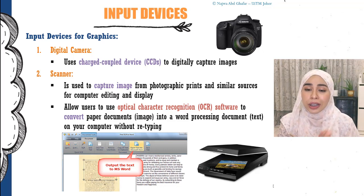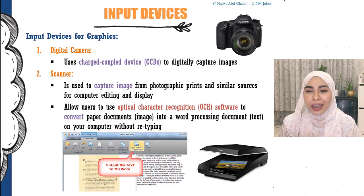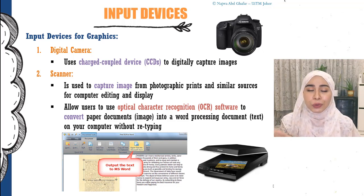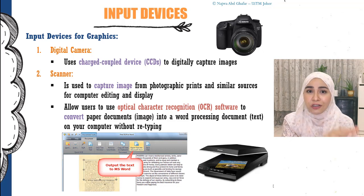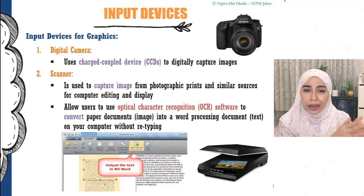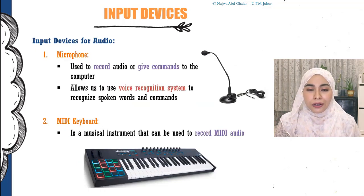Input devices for graphics include the digital camera, which contains a CCD (Charge Coupled Device) that captures images by transforming light into pixels. We also have a scanner, which captures an image and places it inside the computer. If you scan a document or book, OCR software can scan through the text on that image, allowing you to edit the text without retyping the whole thing.